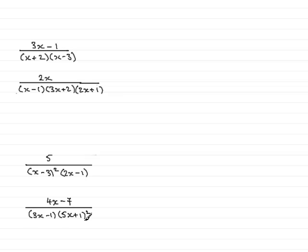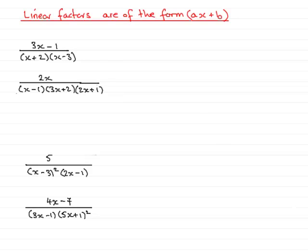And we have several types that I'm going to show you. Now, the first type you're going to meet is what is often referred to as a linear factor. Linear factors are of the form ax plus b, where a and b are constants.